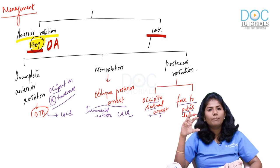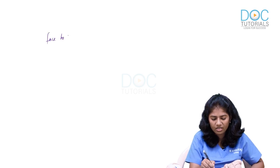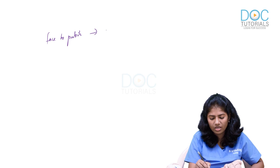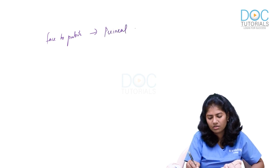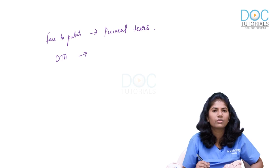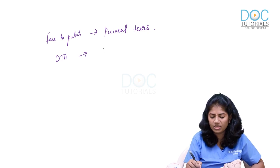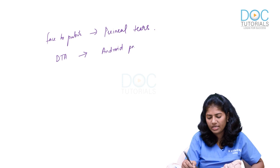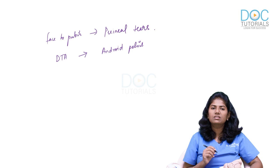Last point: complications of face-to-pubis delivery. Because a bigger diameter — OF or SOF — distends the vulva, face-to-pubis delivery leads to perineal tears. Also remember: deep transverse arrest is usually seen in an android pelvis — an important MCQ.